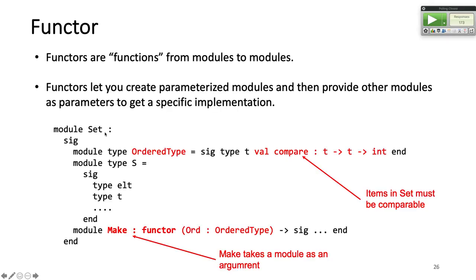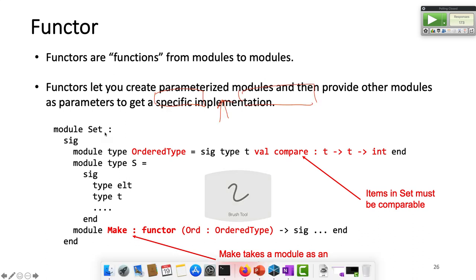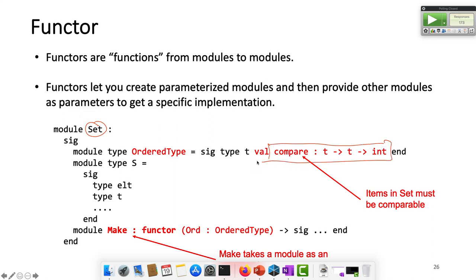A functor is a function that takes a module and creates another module. The example is a set. To create a set, you can put strings, integers, whatever you put — you have to tell me how you compare. As long as you tell me how to compare two items, I can put anything in a set.